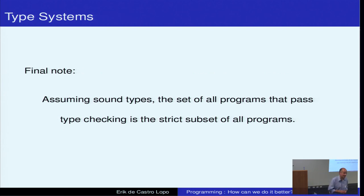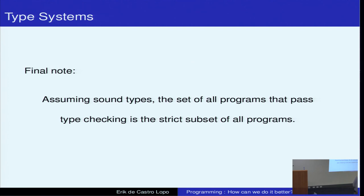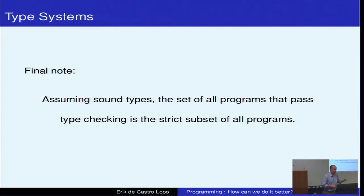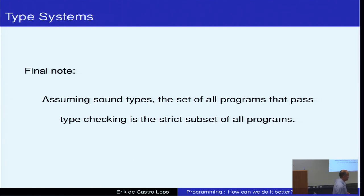A final note on type systems: assuming we've got sound types, the set of all programs that pass type checking is a strict superset of all programs that are provably correct. Going back to Curry-Howard, certain properties that the type system enforces prove that, at least with respect to the subset of problems the type system addresses, those programs are provably correct. They've still got bugs most likely, but they have a proof over some properties that the programs without type checking don't have.